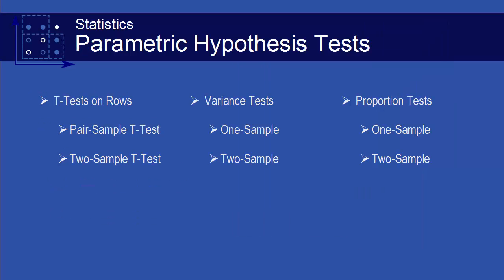In addition to the t-tests for mean-on columns in Origin, Origin Pro provides one- and two-sample variance and proportion tests. T-tests for rows are also supported, including paired sample and two-sample tests.